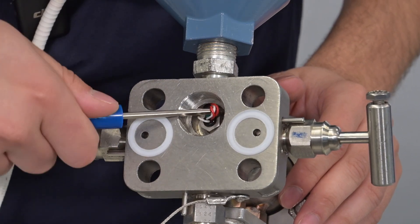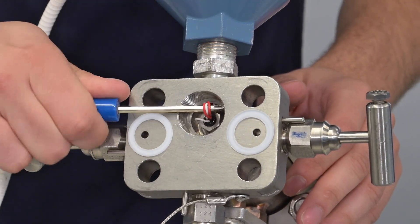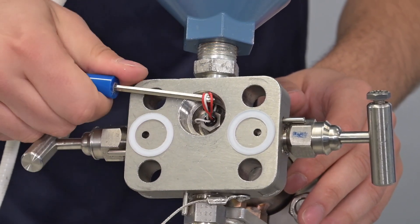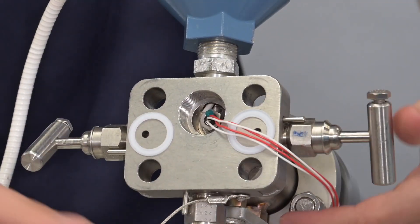Using a screwdriver while feeding the wires through the terminal block, carefully pull the RTD wires out from the nipple connection to the transmitter housing.